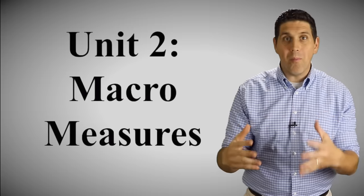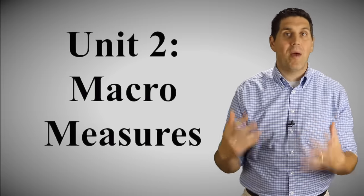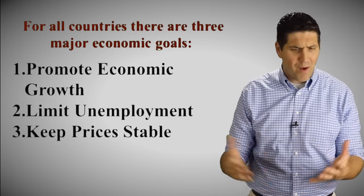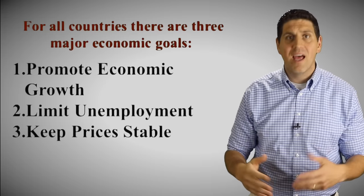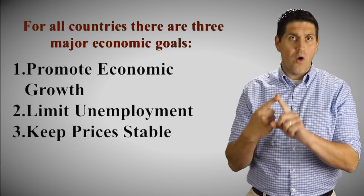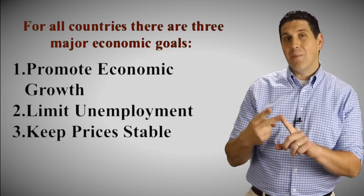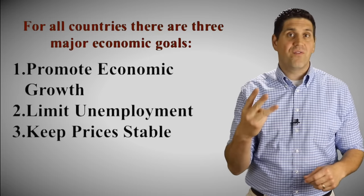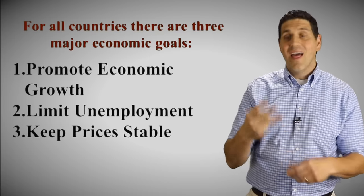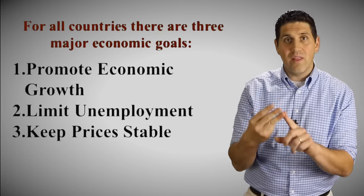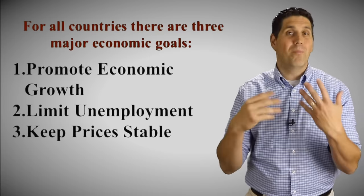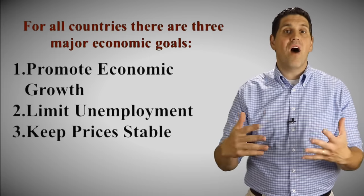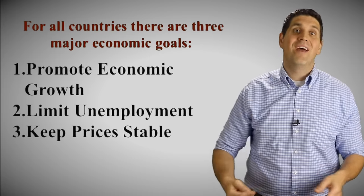Now we jump into full macroeconomics. We talk about the macro measures in unit two: the three goals of every economy. They want to grow over time and produce more stuff, keep unemployment down, and limit inflation or at least keep prices stable. That's what you do in this unit — you cover each of these concepts: how do you measure these things, what are the issues with those measurements, and then we move on and apply that stuff in later units.